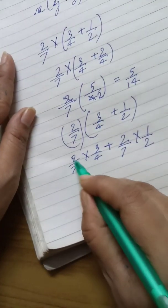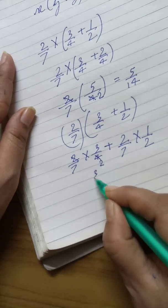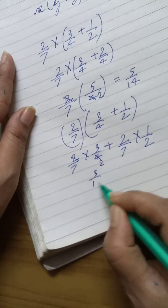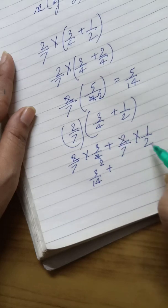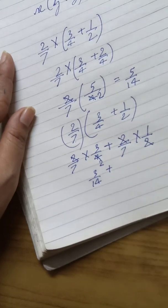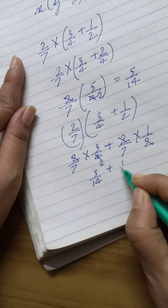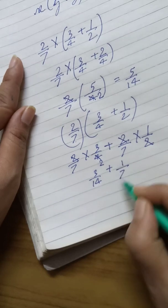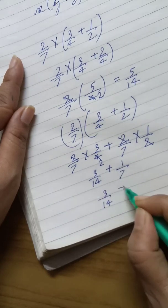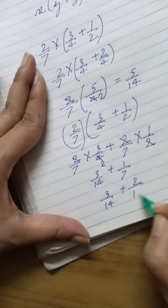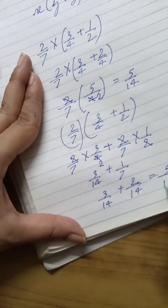Here, 2 and 4 will get cancelled. We have 3 by 14 plus. Here also we can cancel it. So we have 3 by 14 plus 2 by 14, which is 5 by 14.